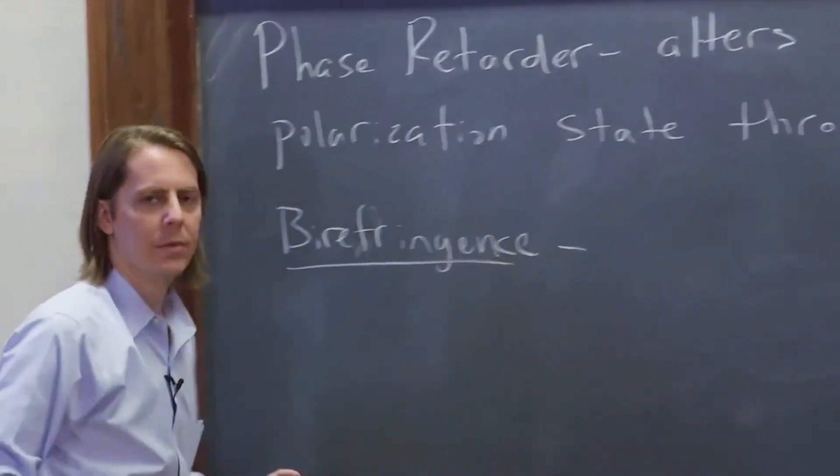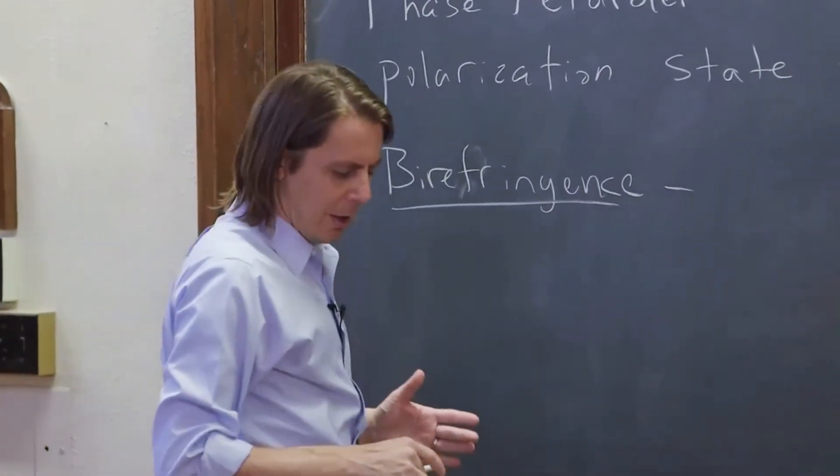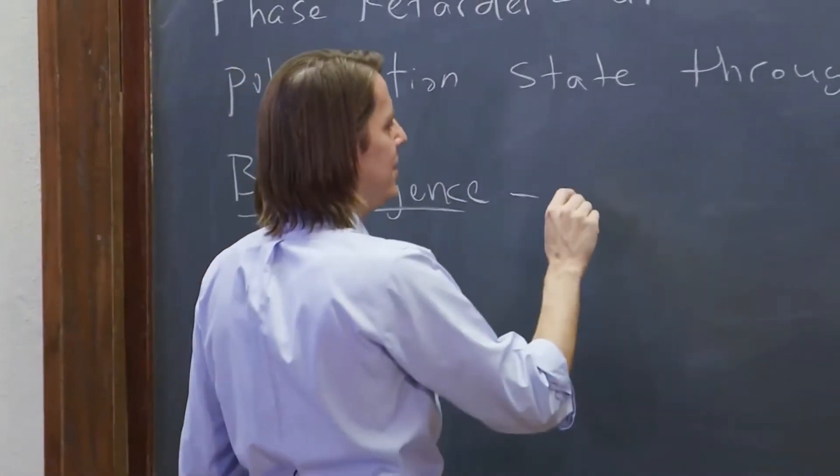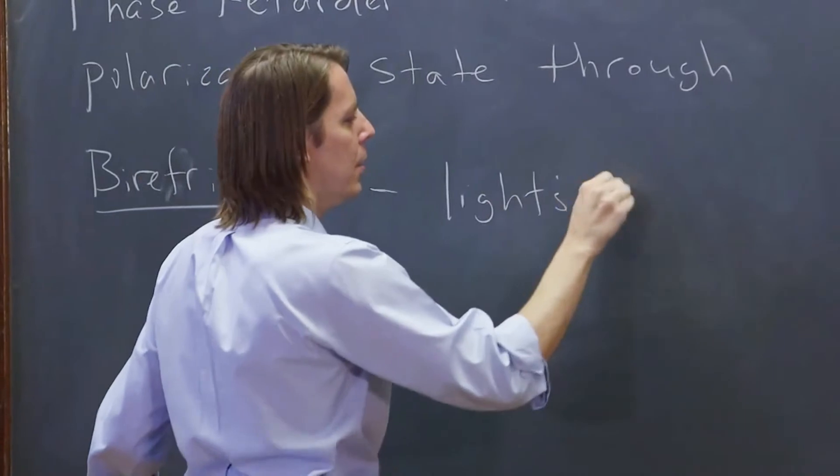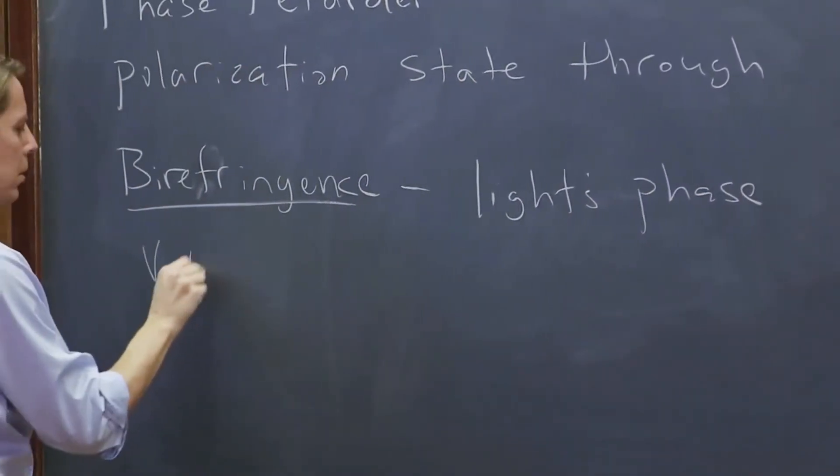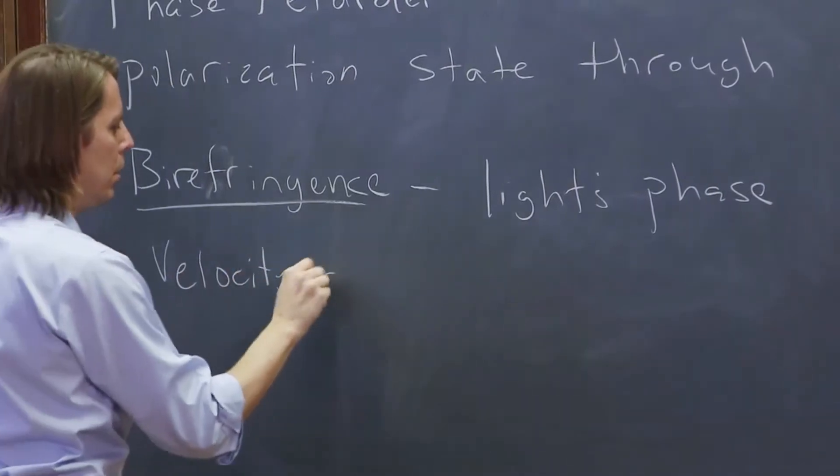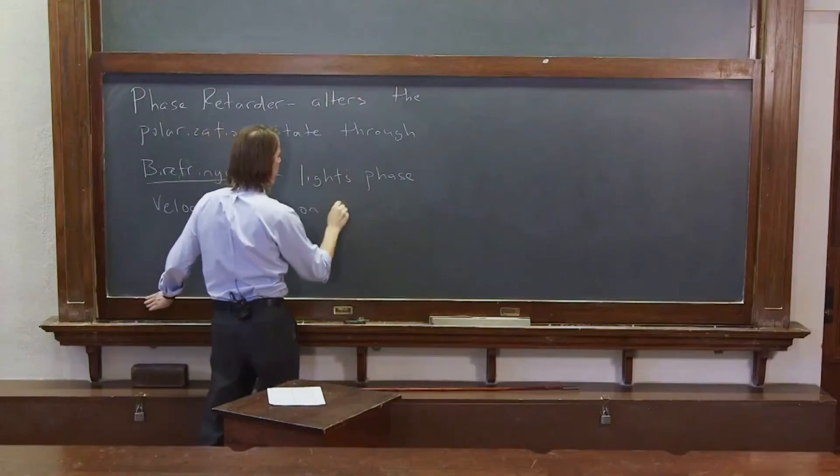Just like dichroism, that's just a word. Let's go ahead and define it. Birefringence basically means the light's phase velocity depends on polarization.